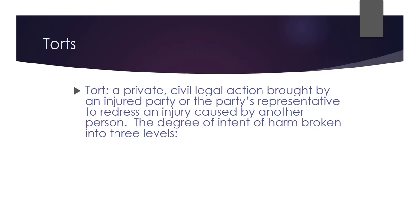From a definitional standpoint, a tort is a private civil legal action brought by an injured party or the party's representative to redress an injury caused by another person. When we talk about torts, the degree of intent of harm is broken into three categories. The first level is an intentional tort — the defendant intended to commit the act and they intended to cause harm. Examples of intentional torts include assault and battery. For civil law purposes, assault is a threat; battery is actual harmful or offensive contact. If you punch somebody, that's battery in a civil sense — you meant to do that and meant to cause harm.